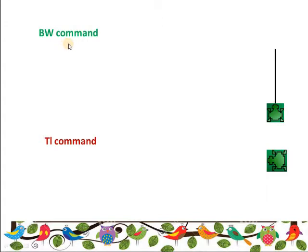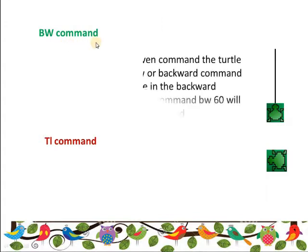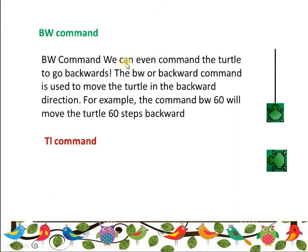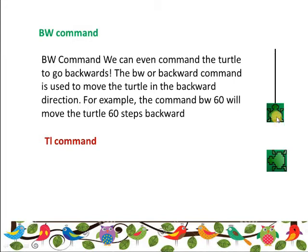Next we have the bw command. We can command the turtle to go backwards. The bw or backward command is used to move the turtle in the backward direction. For example, the command bw 60 will move the turtle 60 steps backward. Similarly, as we move the turtle forward using fw, we can move it backward using the bw command.